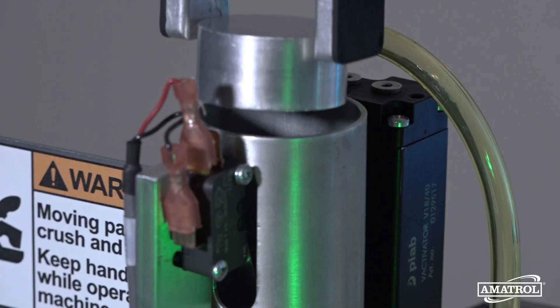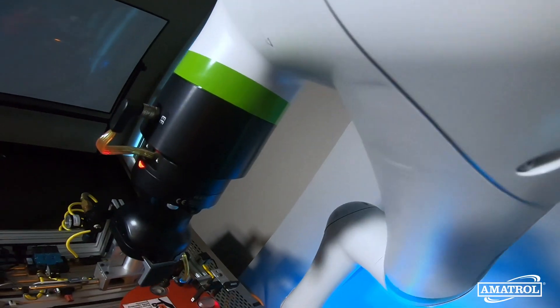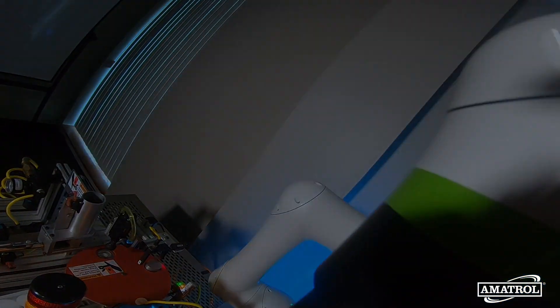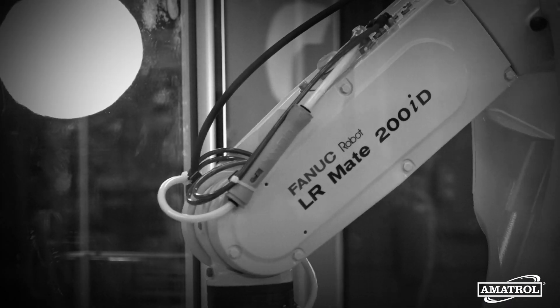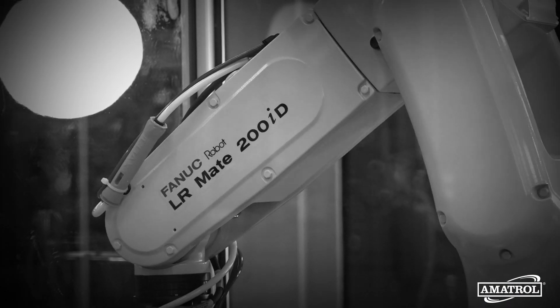Tabletop Smart Factory also teaches industrial robot operation via an integrated robot station. The first robot station available from Amitrol featured a FANUC six-axis articulated arm servo robot.